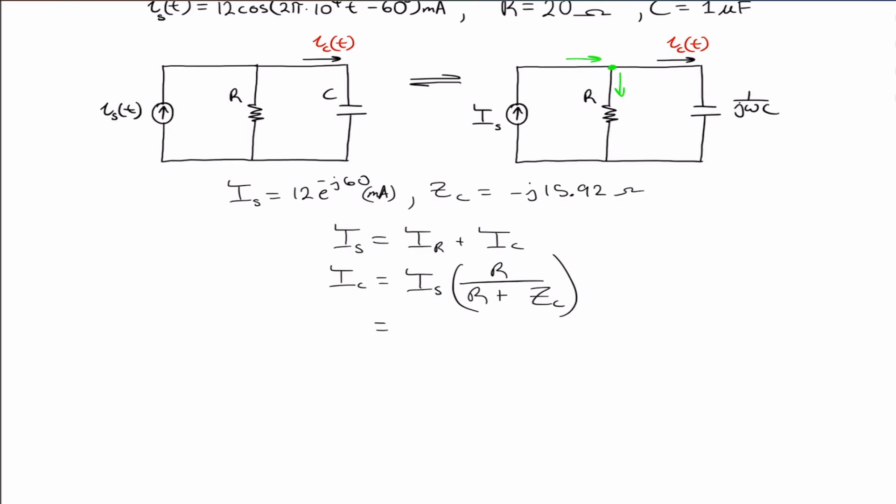So this is then equal to 12 times the complex exponential e to the minus j 60 degrees in milliamps times 20 ohms divided by 20 ohms minus j 15.92. And that is the impedance for the capacitor.